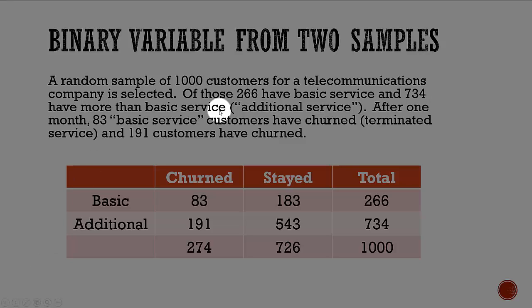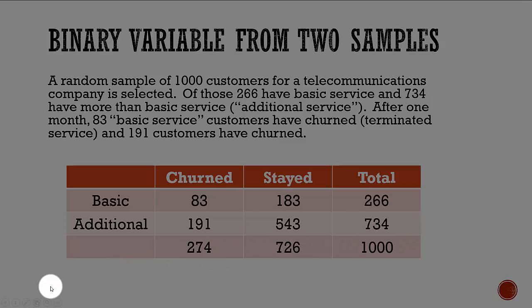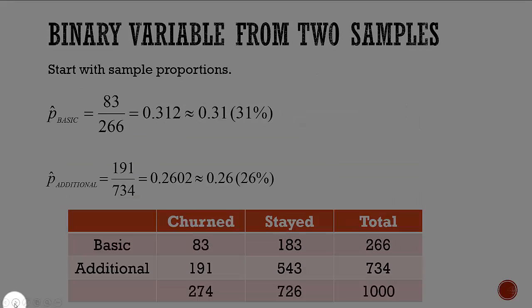Now let's say we have two samples. Of those 1,000 customers, 266 have basic service and 734 have additional services beyond the basic services. So we really have two groups for which we could compute proportions.